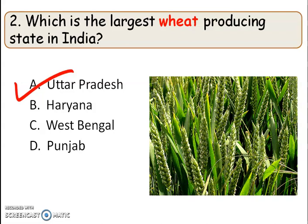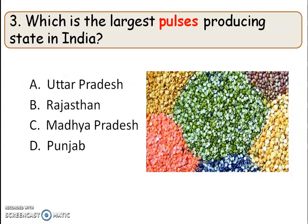The next question: which is the largest pulse producing state in India? The right answer is option C, Madhya Pradesh. Legume crops are harvested for their dry seeds, which are called pulses. Examples of pulses are Moong dal, Masoor dal, Arhar dal, and Rajma. India is the largest producer and consumer of pulses, and Madhya Pradesh is the largest pulse producing state in India.